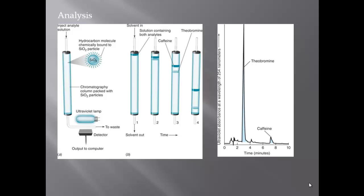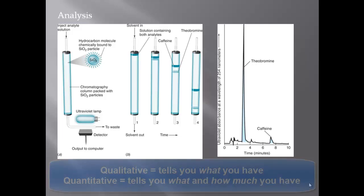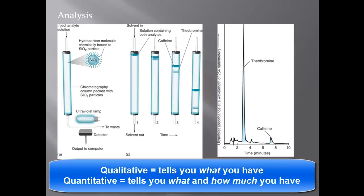So there's two types of analysis. There's a qualitative analysis and a quantitative analysis. Identifying what an unknown is, just like basically what it is, theobromine, caffeine, that just tells me a qualitative analysis. If I want to know how much of that analyte is in that sample, that's a quantitative analysis. A quantitative analysis is obviously a little bit better, but it takes a little bit more to get that answer.